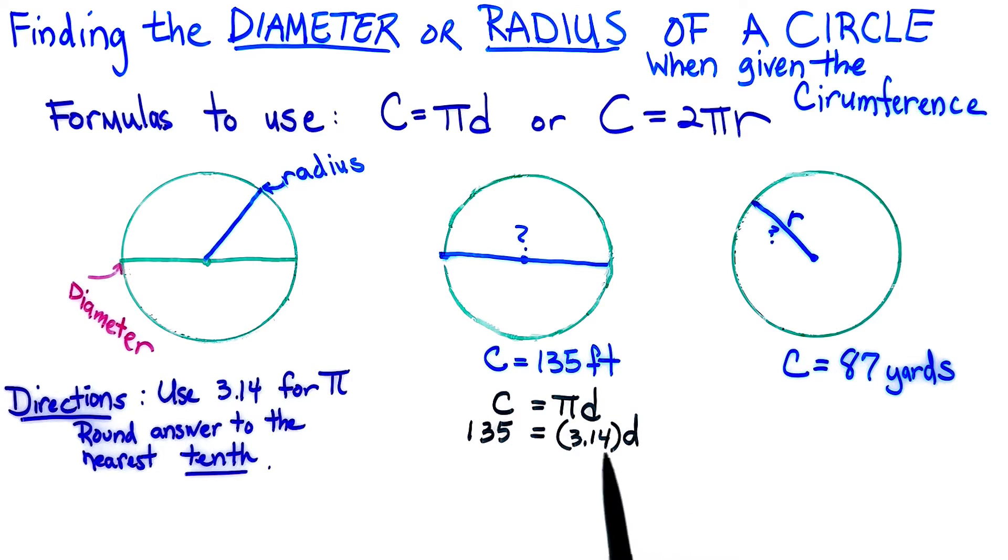We know this is multiplication, so in order to find D, we will divide both sides by 3.14. And we find that our diameter, when we do that division, is 42.99 and it kind of goes on. But remember, they wanted our answer rounded to the nearest tenth.